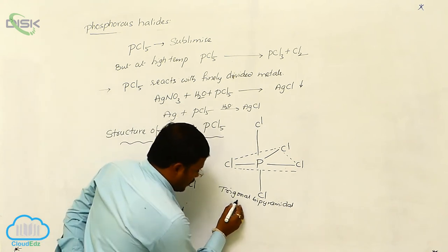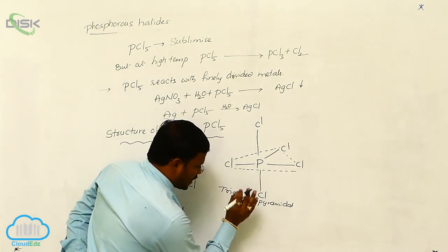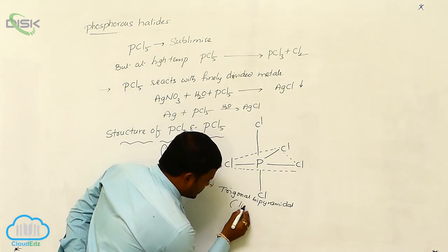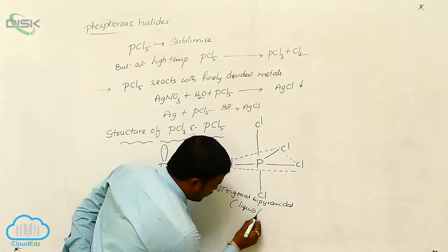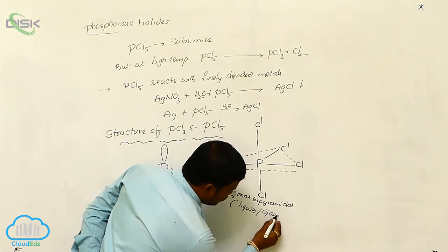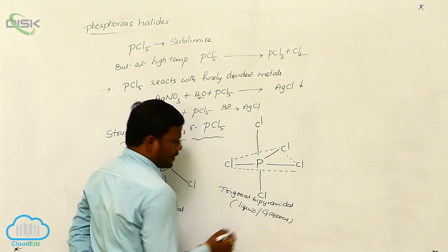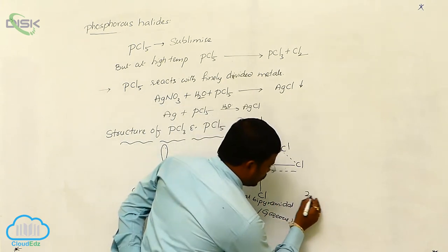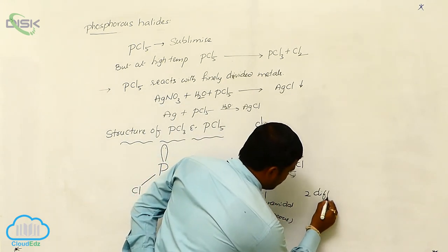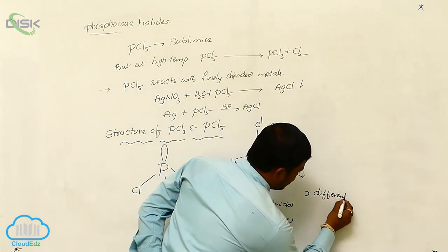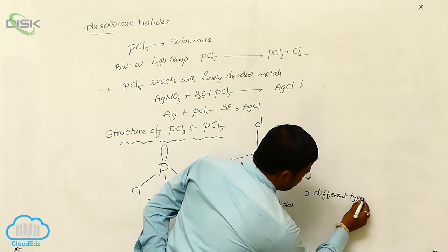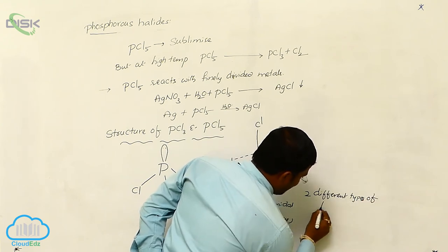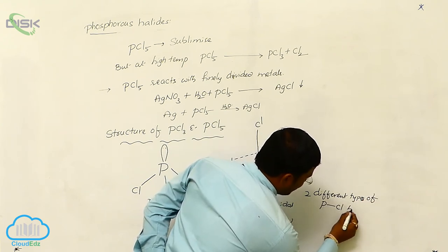Here, phosphorus pentachloride in liquid state or gaseous state only has trigonal bipyramidal with two different types of PCl bondings.